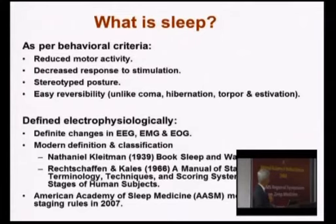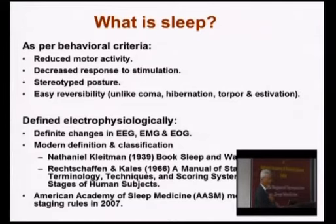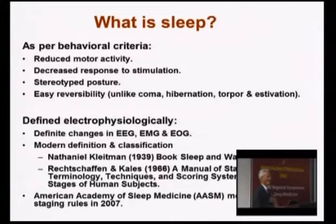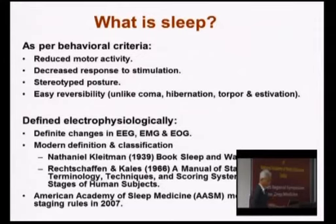If you look at the definition and classification of sleep, one person's name stands apart — Nathaniel Kleitman — who, as early as 1939, wrote in a book about the kind of sleep and sleep classification. Later, Rechtschaffen and Kales gave the classification which is followed broadly even today. And very recently — if you can consider 2007 as recent — the American Academy of Sleep Medicine gave some modifications, essentially not much different from the original Rechtschaffen and Kales classification.